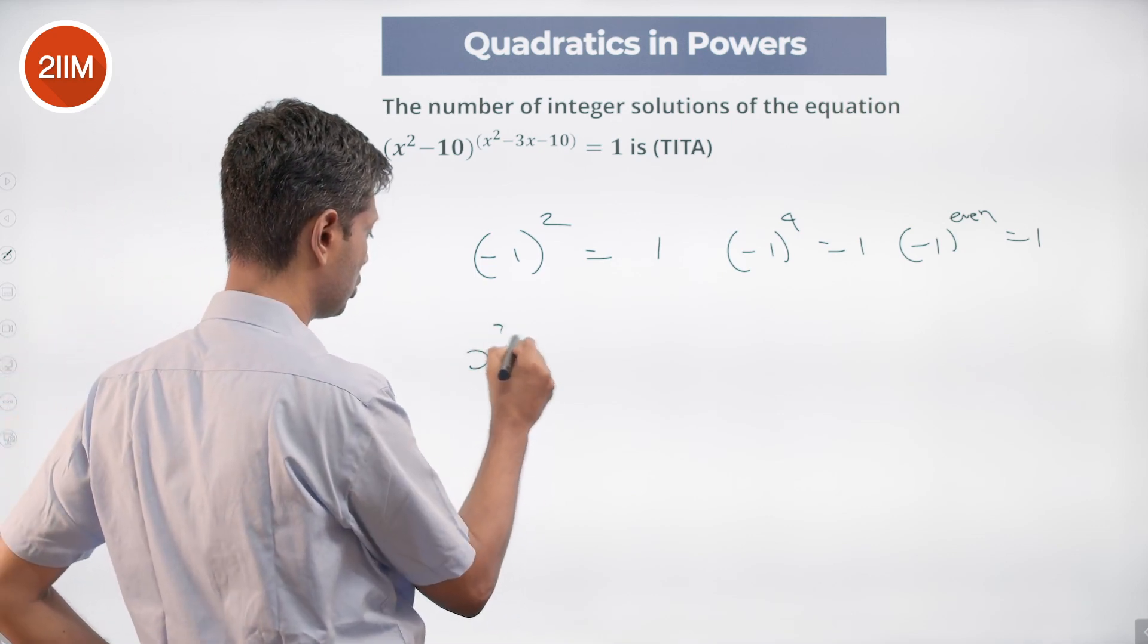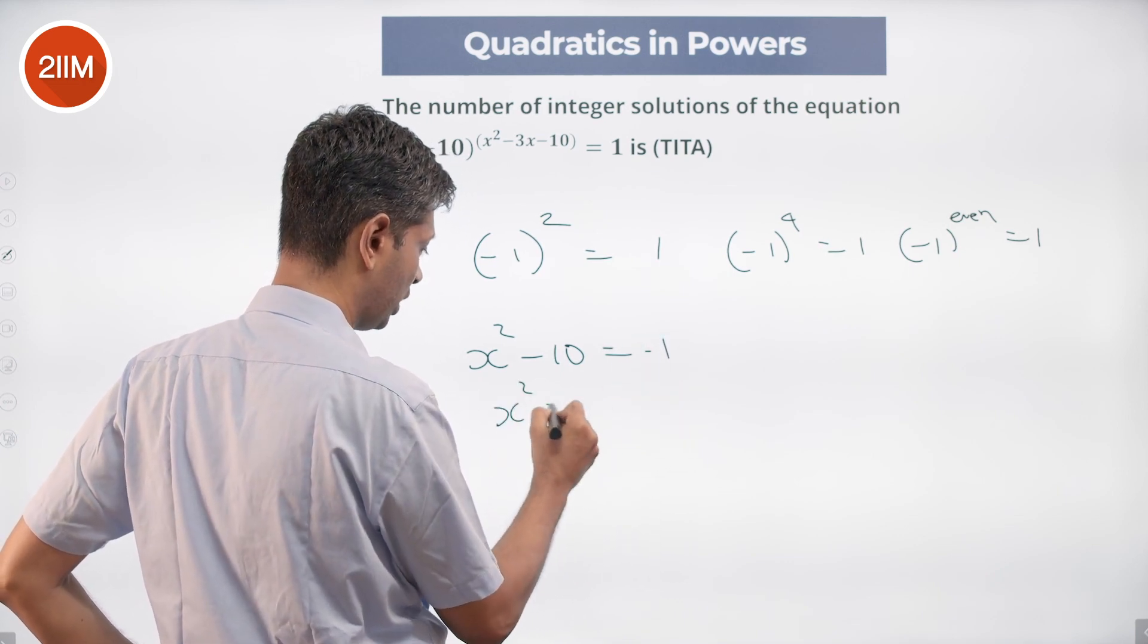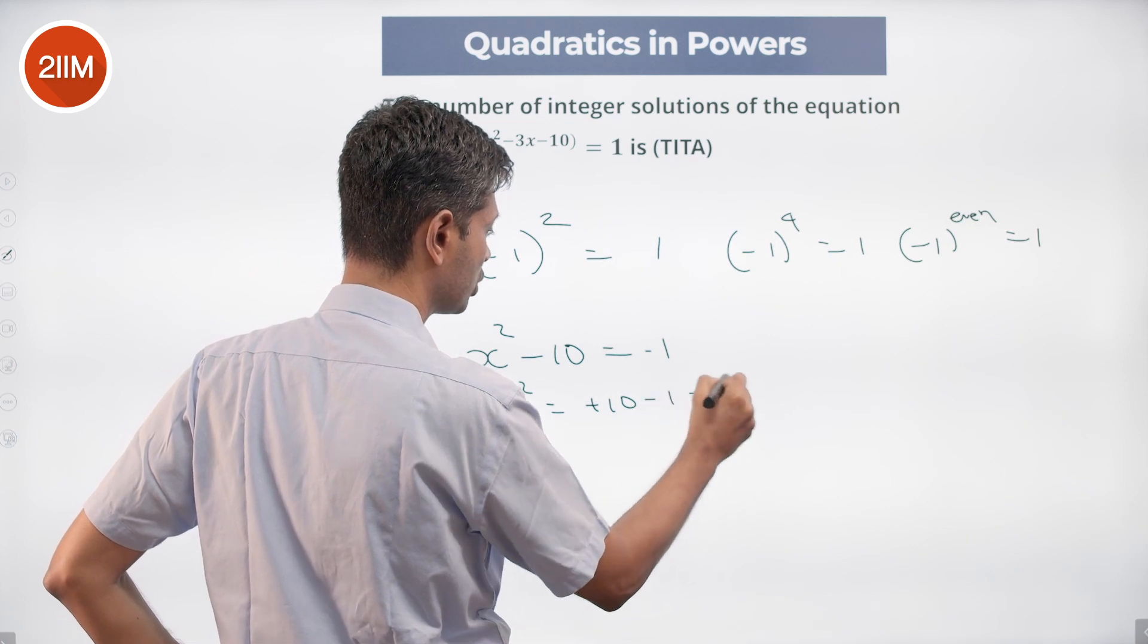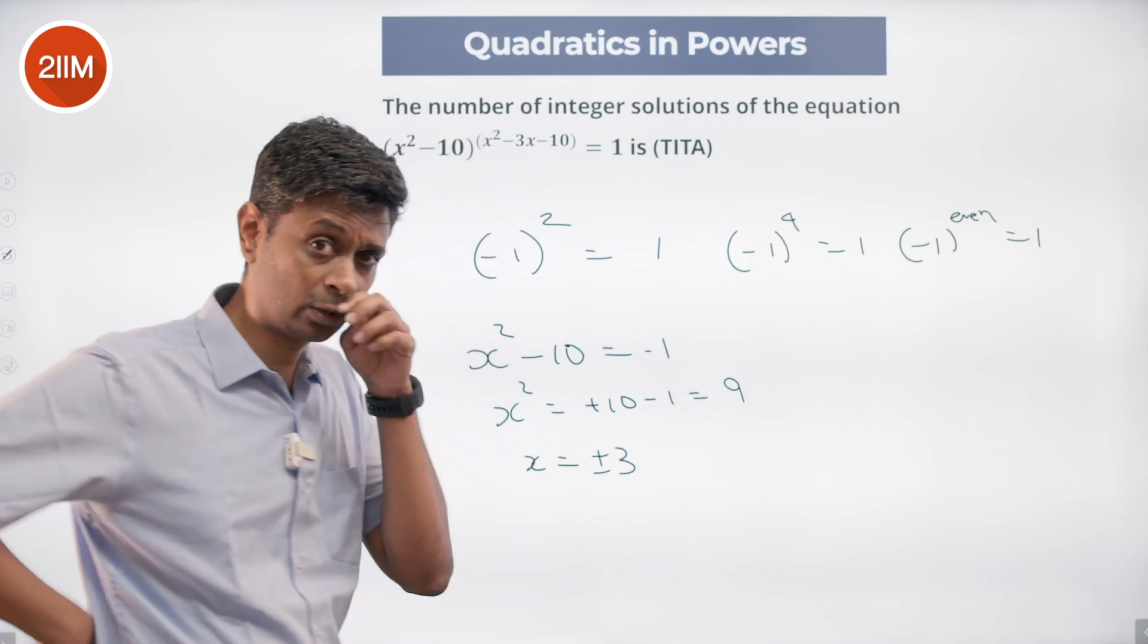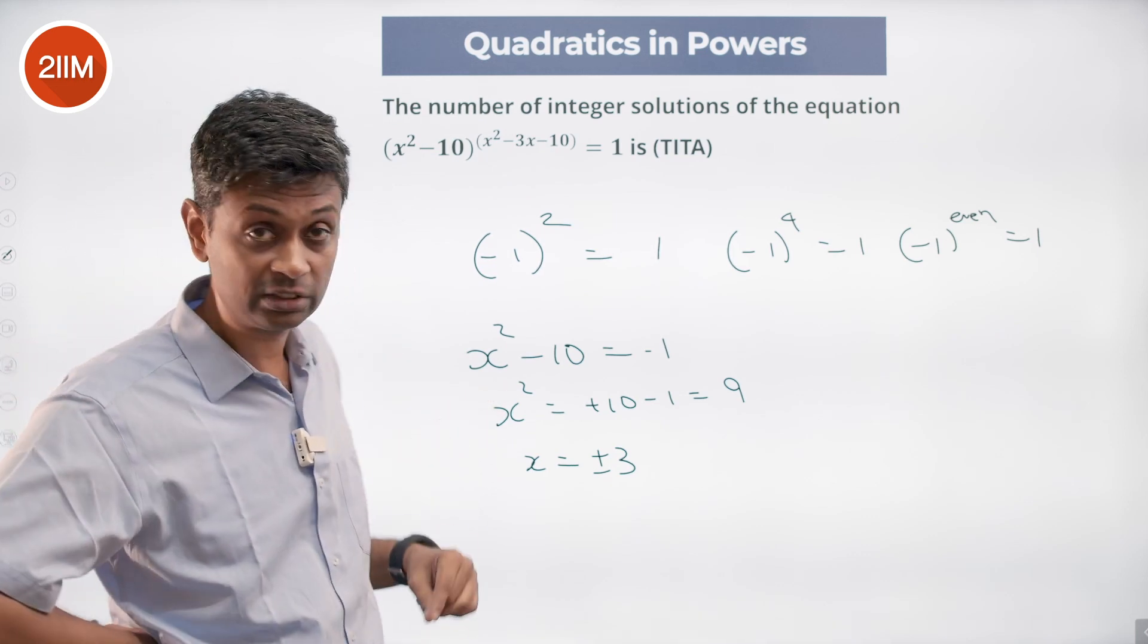So I'm going to solve for x² - 10 = -1, or x² = 10 - 1, which is 9. That means x is equal to plus or minus 3. I've got this far, but I cannot be sure that this will work,